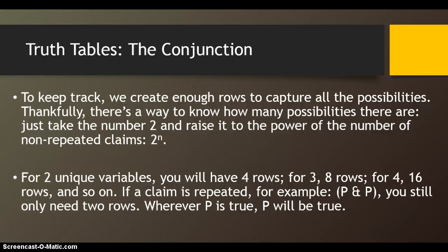That formula is 2 to the n. For 2 unique variables, you'll have 4 rows. For 3, you'll have 8 rows. For 4, 16, and so on. If a claim is repeated — for example, P and P — you still need only 2 rows. Wherever P is true in that world, P will be true, and wherever P is false in that world, P will be false.